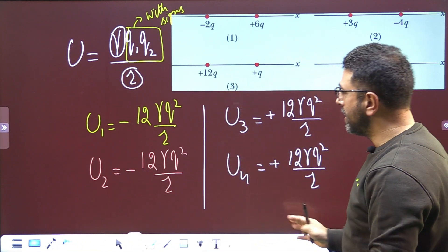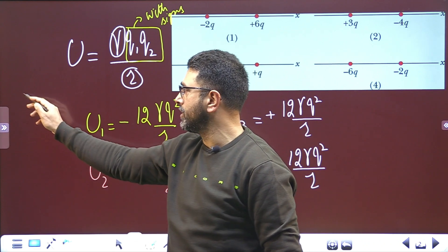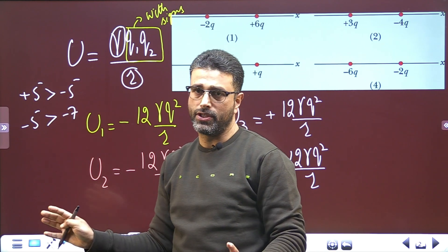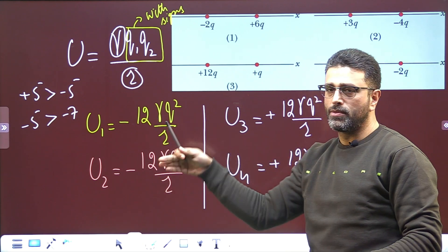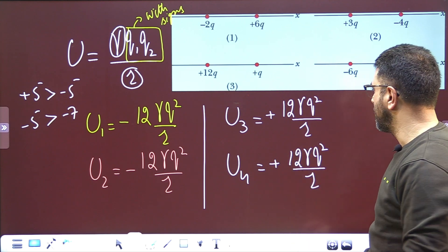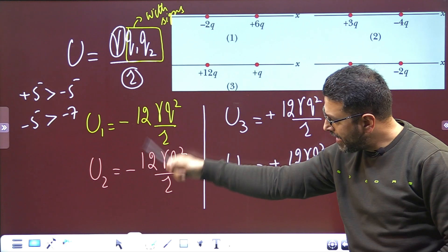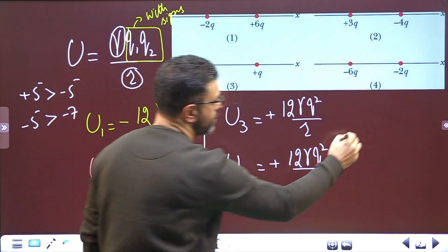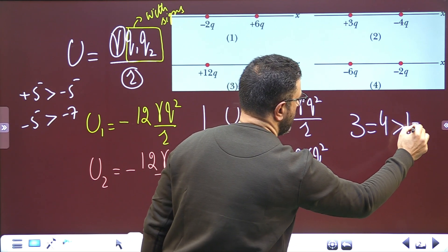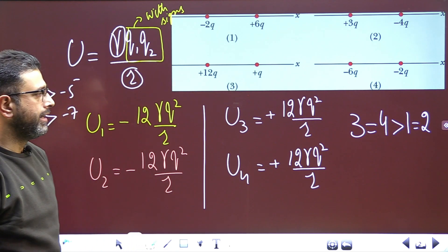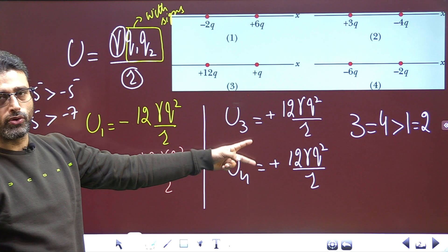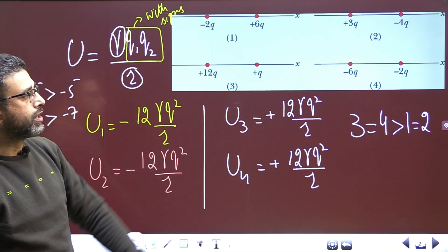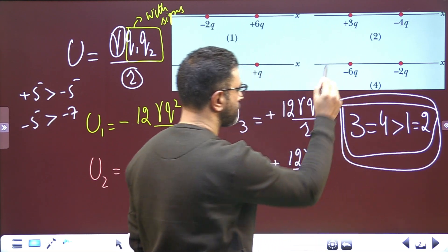Now ranking keeping signs under consideration: +5 is greater than −5, and −5 is greater than −7. Systems 3 and 4 are both positive (+12), and systems 1 and 2 are both negative (−12). So the ranking is: 3 = 4 > 1 = 2. Most positive is greatest, most negative is least.